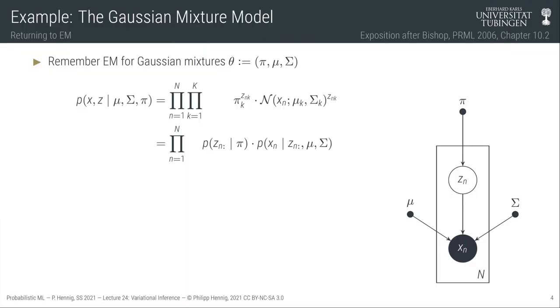The process will be very similar for these two different models: go first through the Gaussian mixture model, and then when we do the topic model you can more easily identify the structure and less of the concrete results. So let's get going. Here is our Gaussian mixture model again.